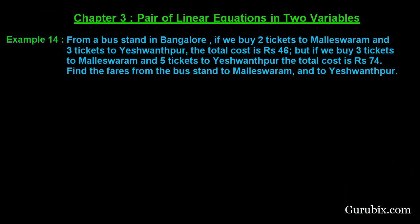Welcome. Let us solve example number 14 of chapter 3. This is a very important question from an examination point of view. The question says: from a bus stand in Bangalore, if we buy two tickets to Maleshwaram and three tickets to Yashwanthpur, the total cost is rupees 46. But if we buy three tickets to Maleshwaram and five tickets to Yashwanthpur, the total cost is rupees 74. Find the fares from the bus stand to Maleshwaram and to Yashwanthpur.